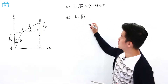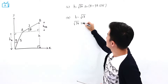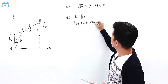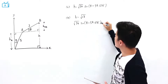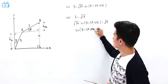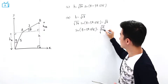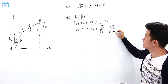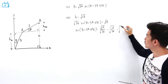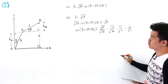Now we need to equate h to square root of 17. That means square root of 34 sine theta plus 59.036 degrees is going to be square root of 17. So sine theta plus 59.036 degrees is going to be square root of 17 divided by square root of 34, which is square root of 17 over 34, which is square root of 1 over 2, which is 1 over square root of 2.